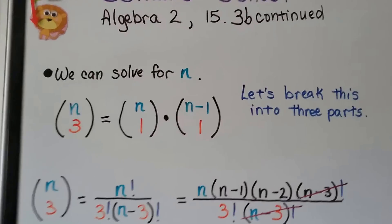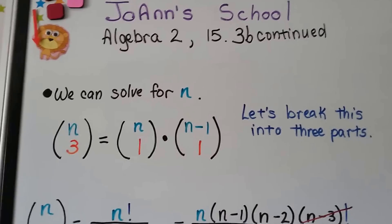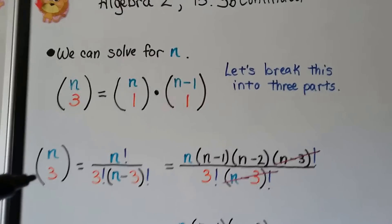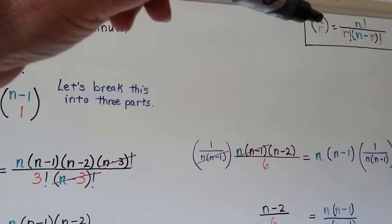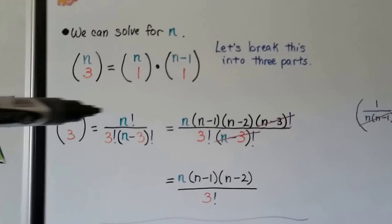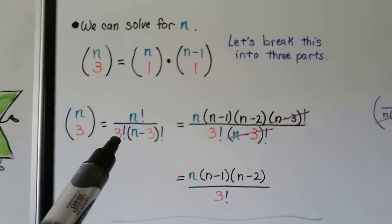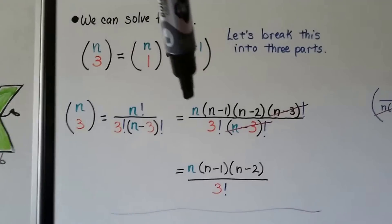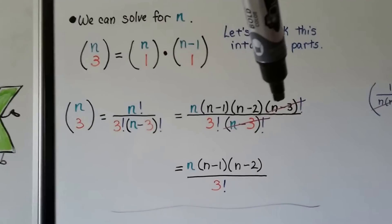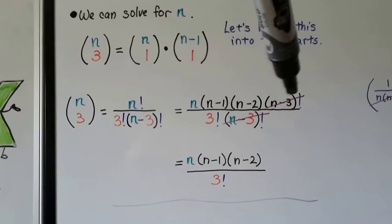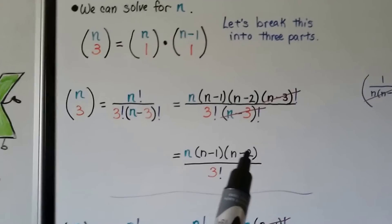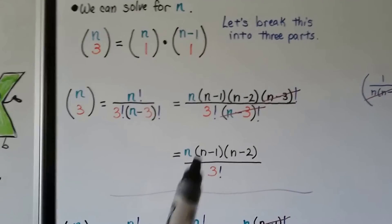Let's try one more. We can solve for n where n choose 3 equals n choose 1 times n minus 1 choose 1. We'll break this into three parts, starting with n choose 3. Using our formula, we have n factorial divided by 3 factorial times n minus 3 factorial. That means we expand to n times n minus 1 times n minus 2 times n minus 3 factorial, cancel the common factorials, leaving n times n minus 1 times n minus 2 divided by 3 factorial.